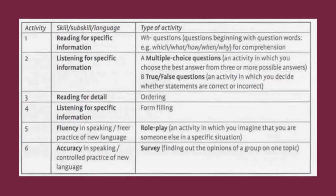Activity 1: Reading for Specific Information. Activity 2: Listening for Specific Information. Type of activity: (A) multiple-choice questions — an activity in which you choose the best answer from three or more possible answers; (B) true/false questions — an activity in which you decide whether statements are correct or incorrect. Activity 3: Reading for Detail. Activity 4: Listening for Specific Information — Form Filling. Activity 5: Fluency in Speaking/Freer Practice of New Language — Role-play, an activity in which you imagine that you are someone else in a specific situation. Activity 6: Accuracy in Speaking/Controlled Practice of New Language — Survey: finding out the opinions of a group on one topic.